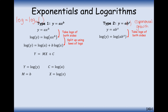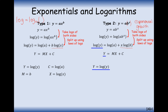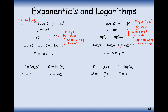Taking logs of both sides — remember log here is log base 10 — and splitting up the right-hand side using laws of logs, we get log of y equals log of A plus x times log of b. You can see that the x and the b have swapped positions compared to type 1. That means the x-axis is still going to be the x-axis, and log b equals the gradient m. So the y-axis is log y, the constant c is log A, the x variable is just x, and the gradient is log of b.